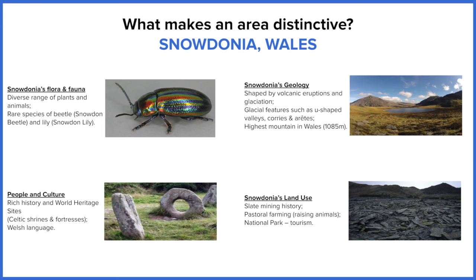Let's start with geology. Snowdonia, like much of the UK, has been influenced by volcanic activity. Millions of years ago we were on a plate margin and we did have volcanoes, which is not the case now. Some features in Snowdonia have been formed because of that — volcanic eruptions created igneous and metamorphic rock there. We've also had ice ages and glaciation which have carved out some of those features as well.